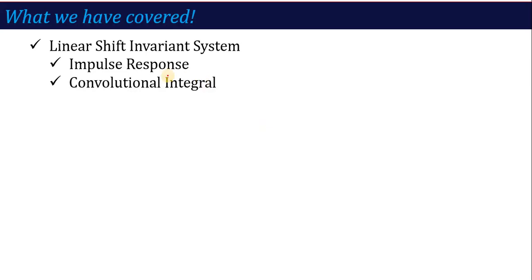In the last lecture, we covered the linear shift invariant system — what is LSI — and based on the convolution integral, we studied problems on how we can calculate the convolution integral of a linear shift invariant system. How we calculate the output when the system input X(t) and impulse response h(t) is given.